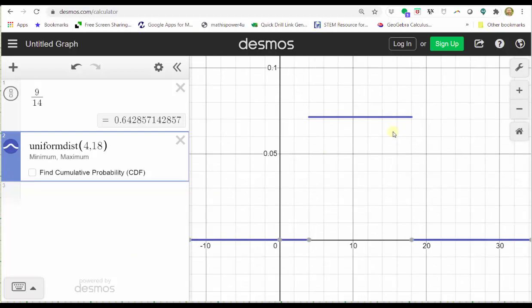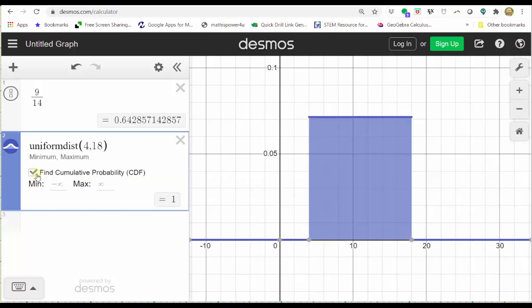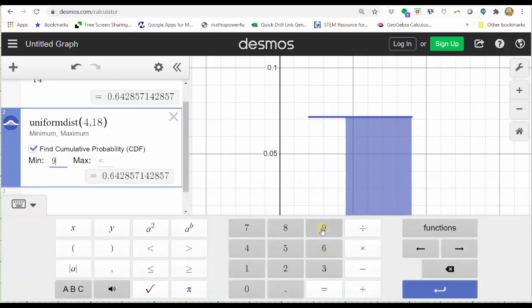To find the probability that X is greater than nine, click the find cumulative probability. Change the min to nine. We could leave the max at infinity, but we know the max is 18, so let's change the max to 18, which does not change the result.